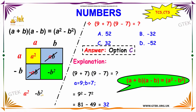So for 9 plus 7 into 9 minus 7: a square is equal to 81 and b square is equal to 49. We get the answer as 32. The option is C.